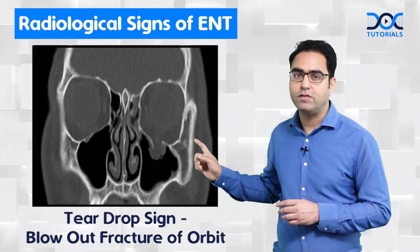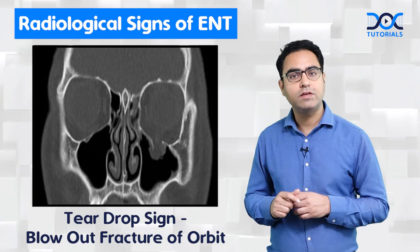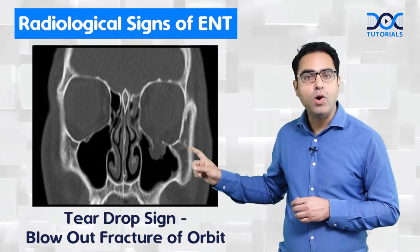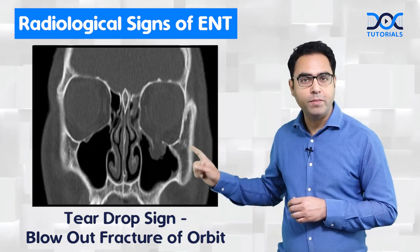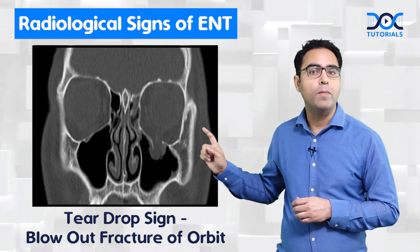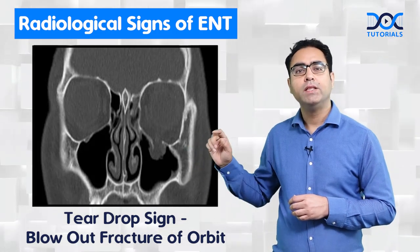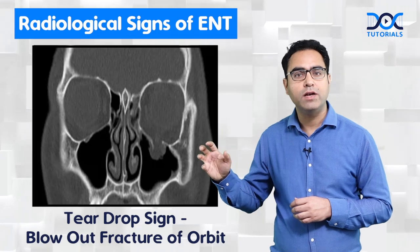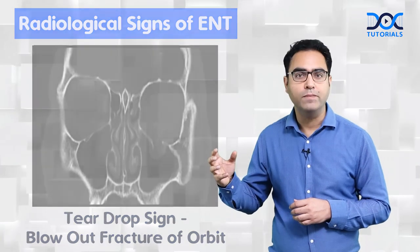The last sign is called the teardrop sign, or teardrop opacity, which is seen on a CT scan of a patient who suffered a blowout fracture of the orbit — a fracture of the orbital floor caused by injury with a solid rounded object like a golf ball. These are the important radiological signs of ENT, important for visual questions in your exam as well.